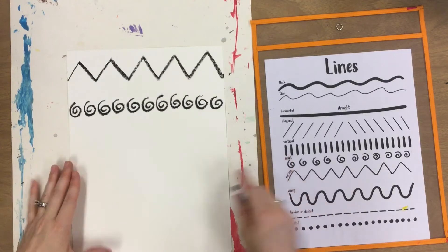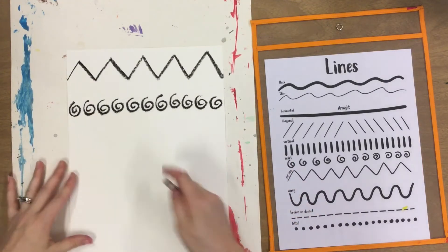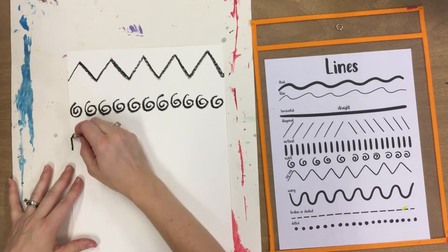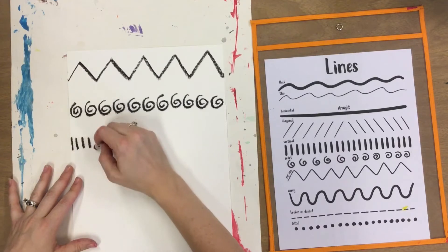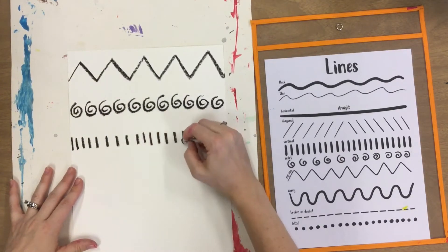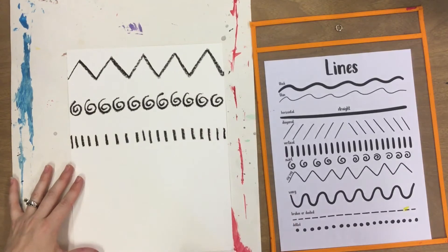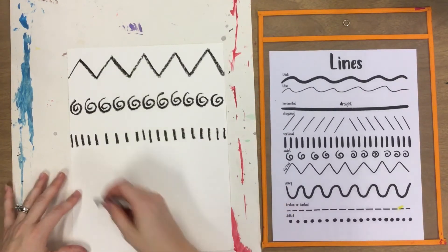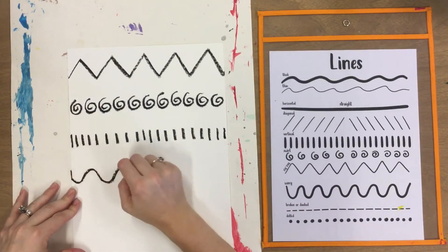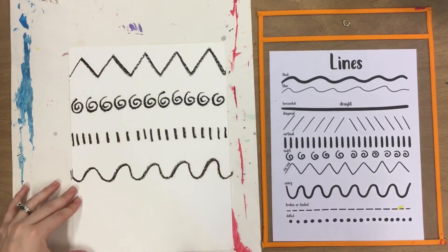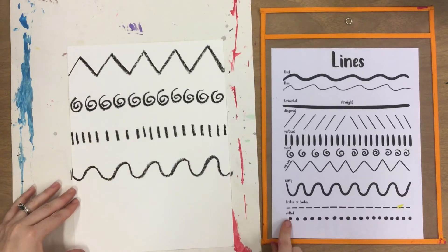So now I'm going to choose another type of line: vertical lines. And since vertical lines go up and down and we're going across our paper, I'm going to make a lot of vertical lines that go the whole way over. Let's try a wavy line. Maybe a dotted line.